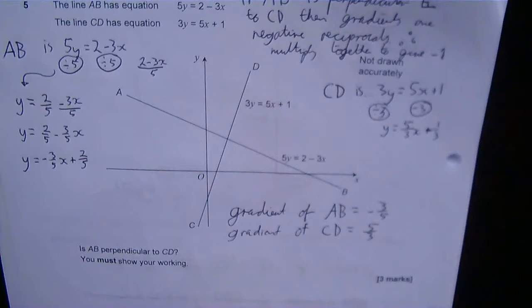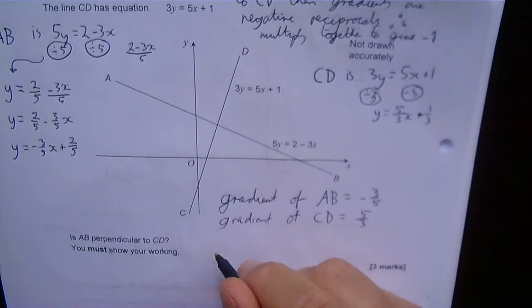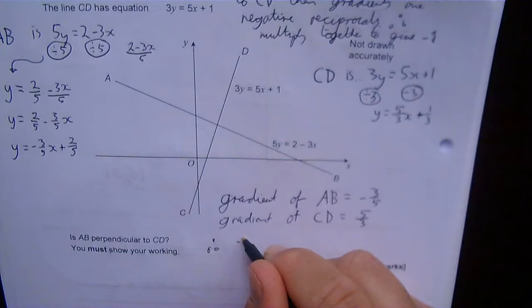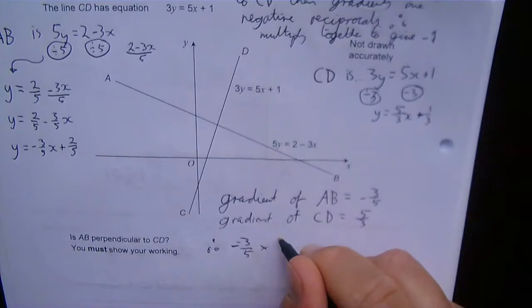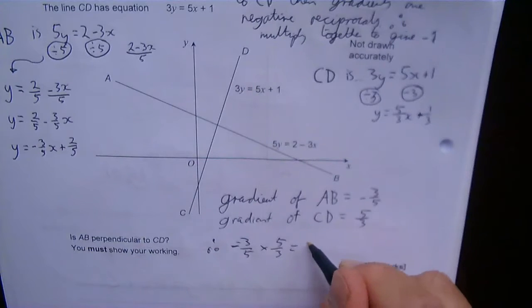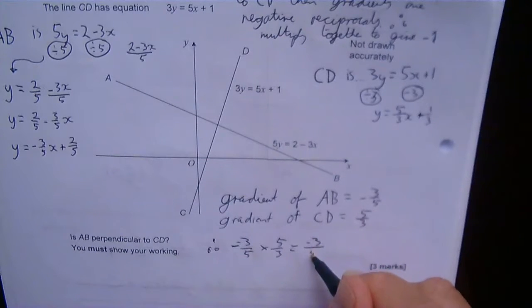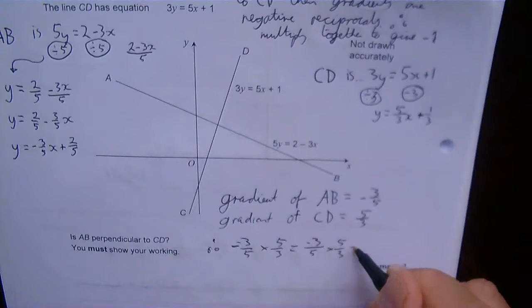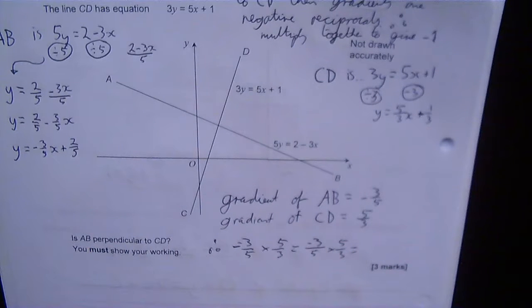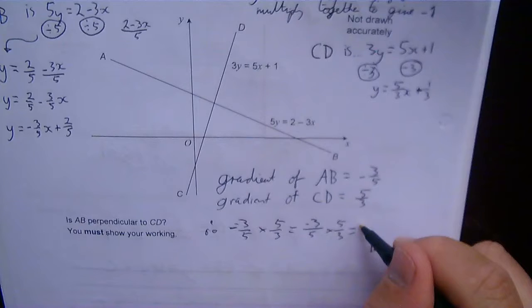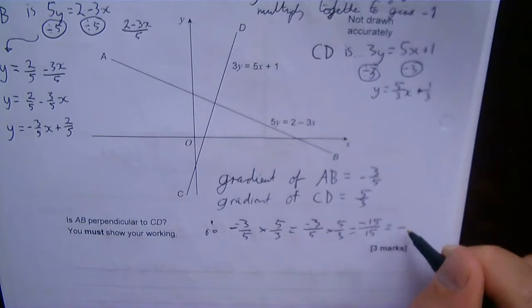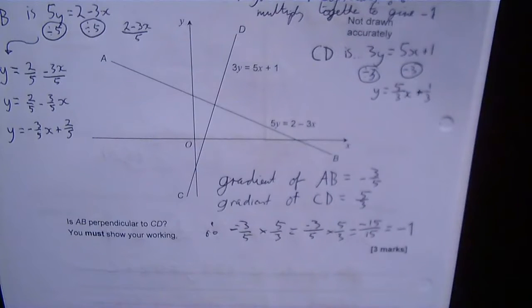Therefore, -3/5 times 5/3—that's the same as -3/5 times 5/3. If I multiply that out, we would have -15/15, which is -1. So they multiply together to give -1, so they are negative reciprocals.